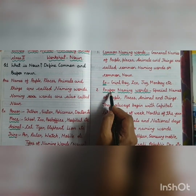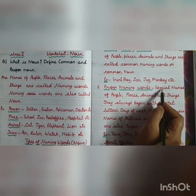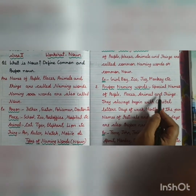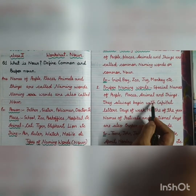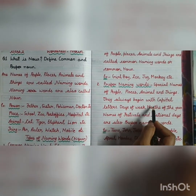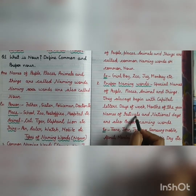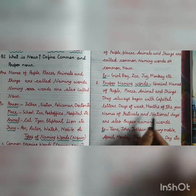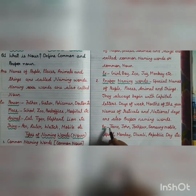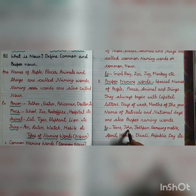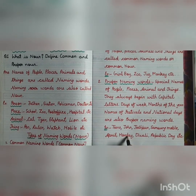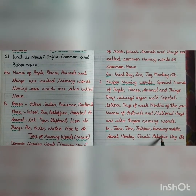Second one is proper naming words. Special names of people, places, animals and things. They always begin with capital letters. Days of the week, months of the year, names of festivals and national days are also called proper naming words. Examples: Tina, John, Jodhpur, Samsung Mobile, April, Monday, Diwali, Republic Day.